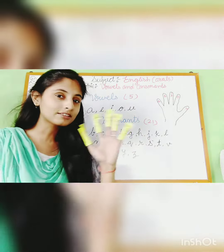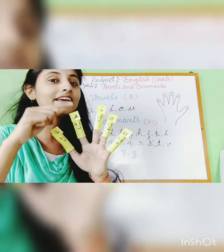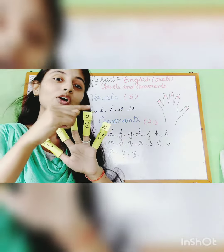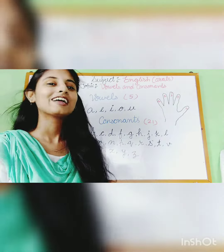So, vowels — what are they? A, E, I, O, U.